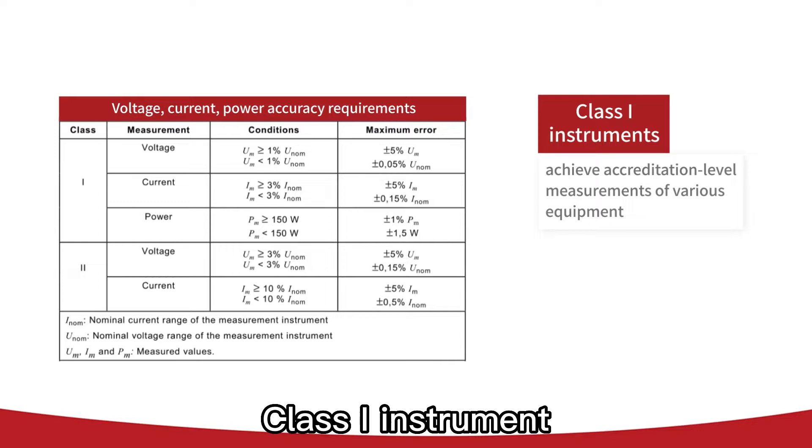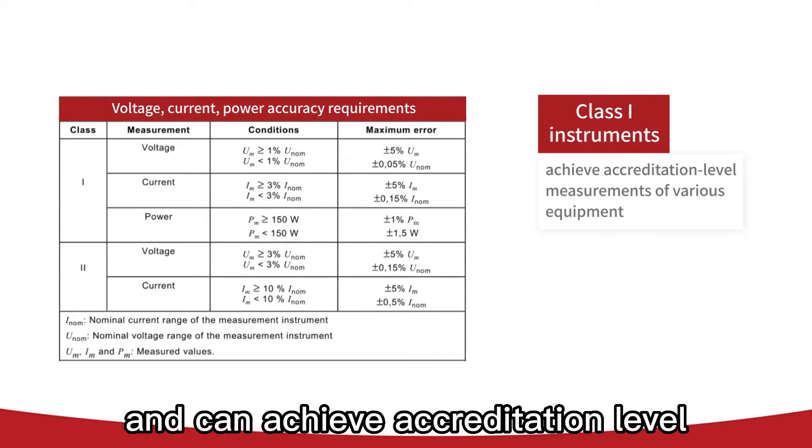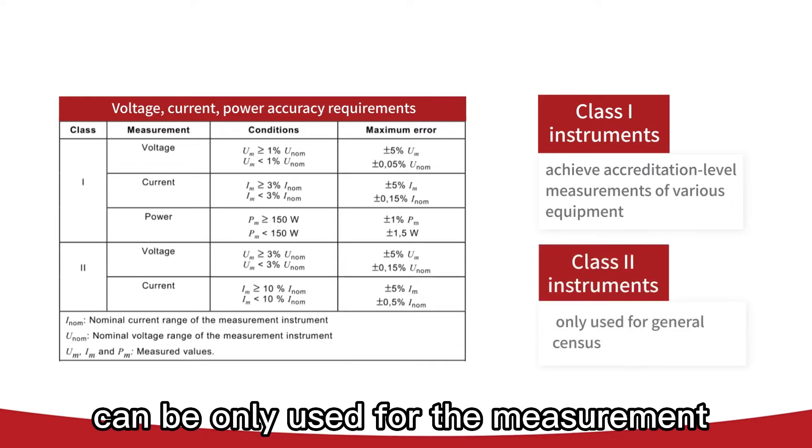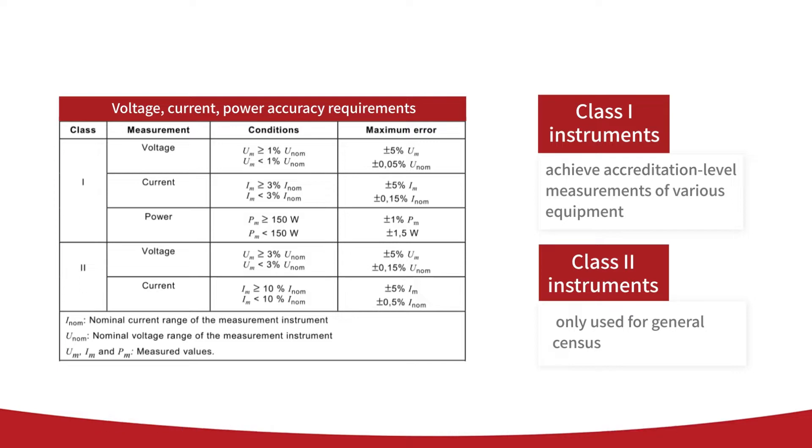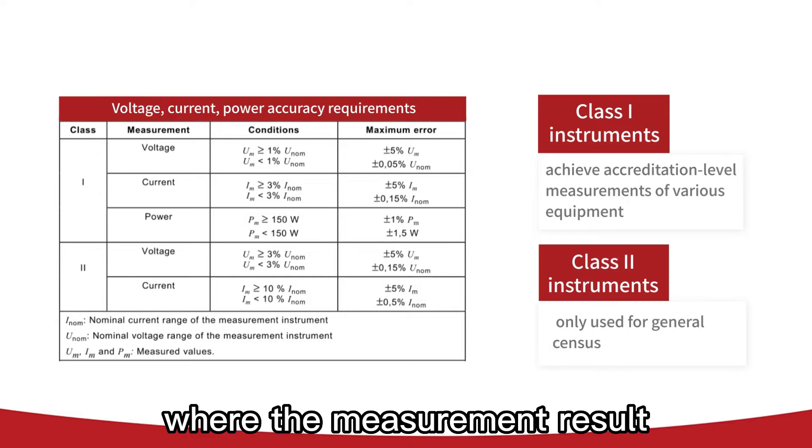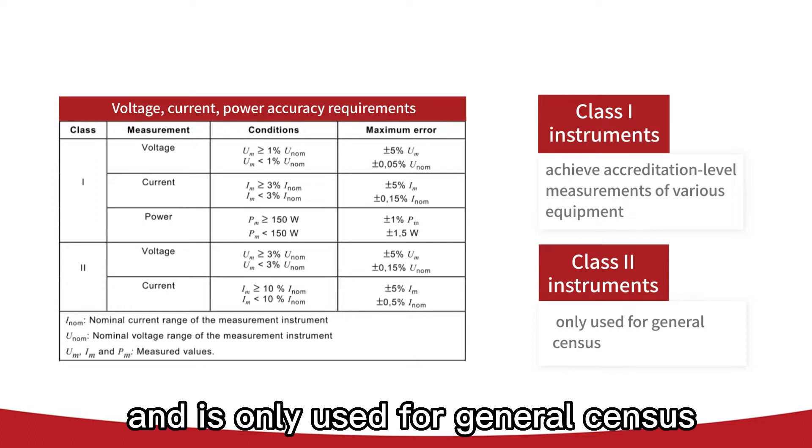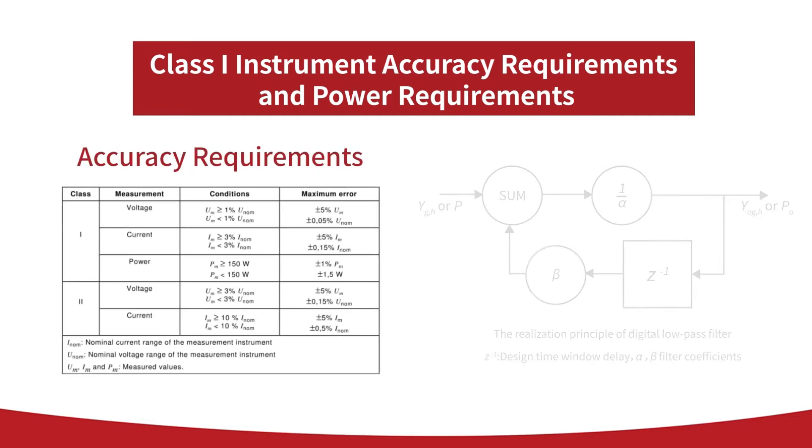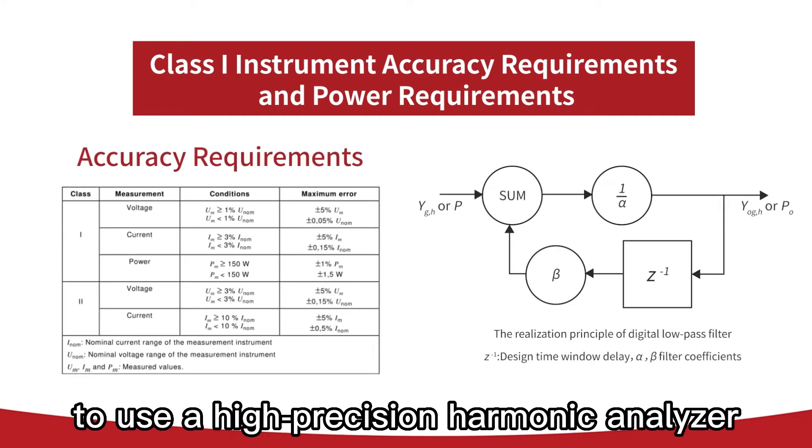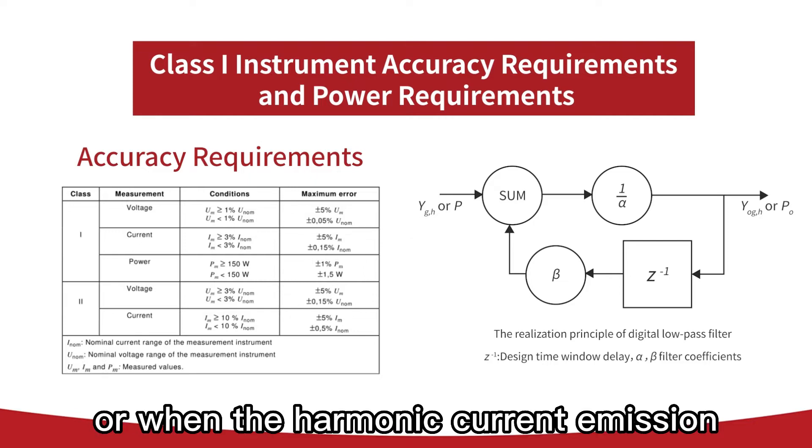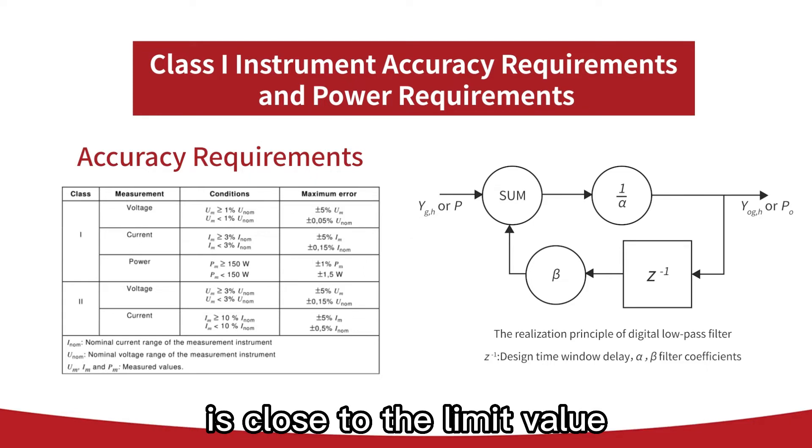Class I instruments have high measurement accuracy and can achieve accreditation-level measurements of various equipment. Class II instruments can only be used for the measurement of harmonic current emission where the measurement result obviously does not exceed the limit value and is only used for general purposes. Therefore, it is recommended to use a high-precision harmonic analyzer when performing accreditation tests or when harmonic current emission is close to the limit value.